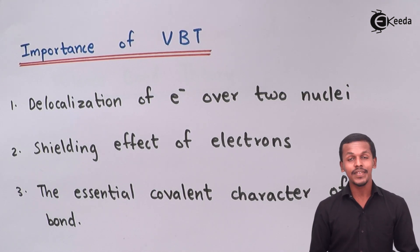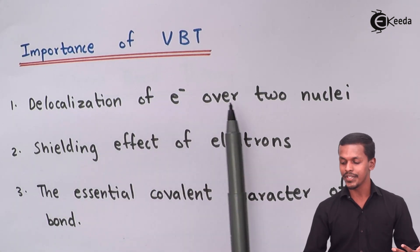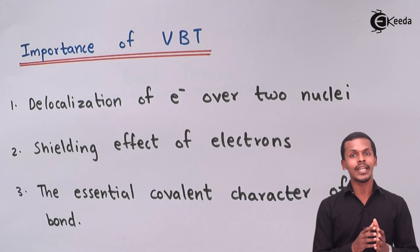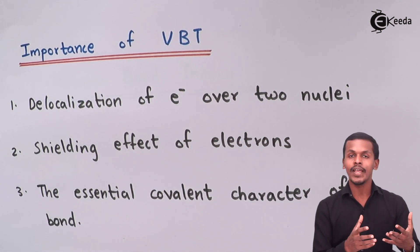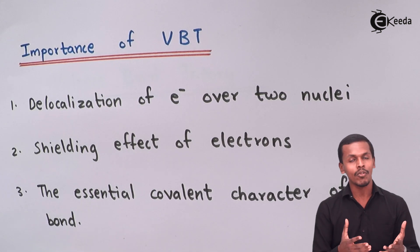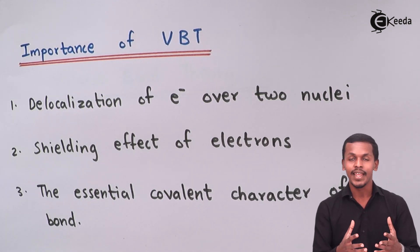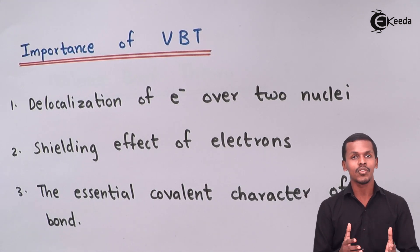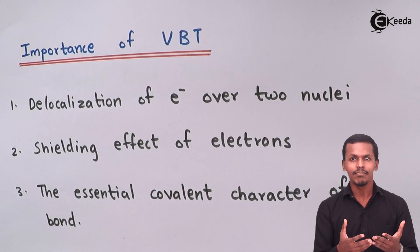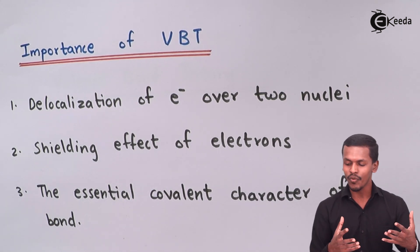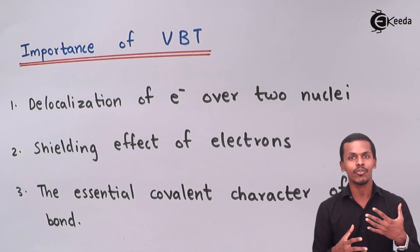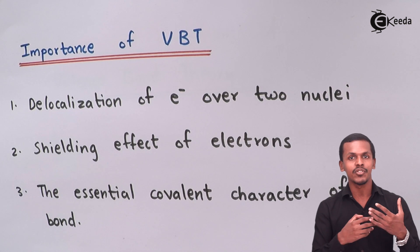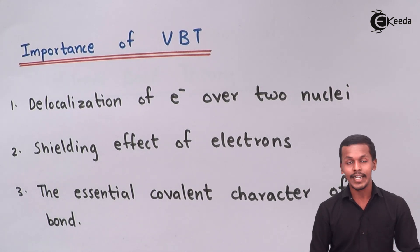Talking about the importance of VBT — that is the valence bond theory — the first point is the delocalization of electrons over the two nuclei. This is the first key idea: electrons can be delocalized or distributed over the two nuclei, and because of this, bonding can happen. Whenever a covalent bond is formed through unpaired valence electrons, those electrons become delocalized over the two nuclei.